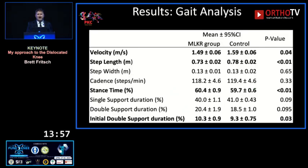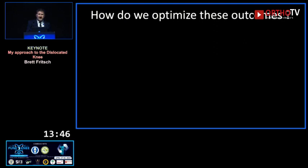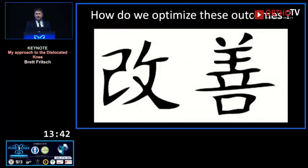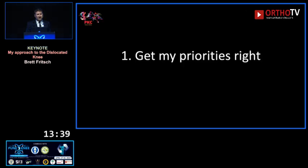In our gait analysis we saw that they walk just a little slower, step just a little shorter, spend more time in stance phase and in double stance phase — suggesting some concern about knee function. So how do we optimize it? We use the approach of Kaizen — getting every little piece right.